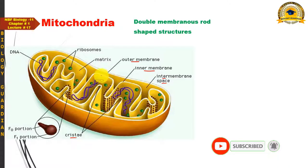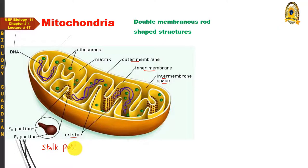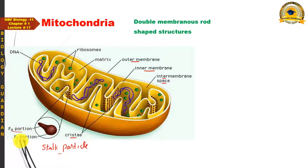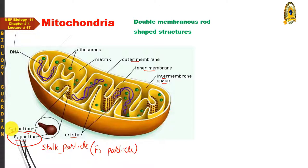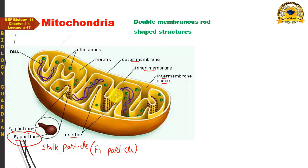The surface of the inner membrane is occupied by some Stalk particles. Each Stalk particle consists of two portions: an F0 portion, which is embedded in the inner mitochondrial membrane matrix, and an F1 portion, which is projected above the membrane. Because of this projection, the inner surface of the cristae membrane appears rough rather than smooth.